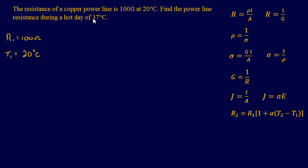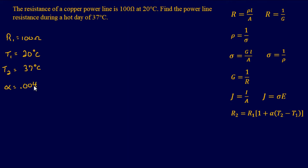We know the second temperature T₂ is 37 degrees Celsius. Looking at our equation, we have everything we need except the temperature coefficient. The temperature coefficient can be found in a few ways — some PE reference material includes it, but in most problems it may be given because it's not exactly the same from book to book and may vary slightly. In my PE reference book it is 0.004.